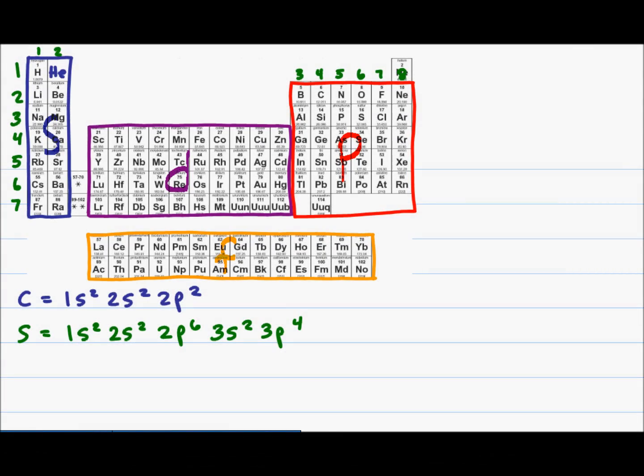In part one of the electron configuration tutorial we looked at how to find the configurations for carbon and sulfur. Before moving on to a more complex example such as bromine, let's understand the placement of the d-block.